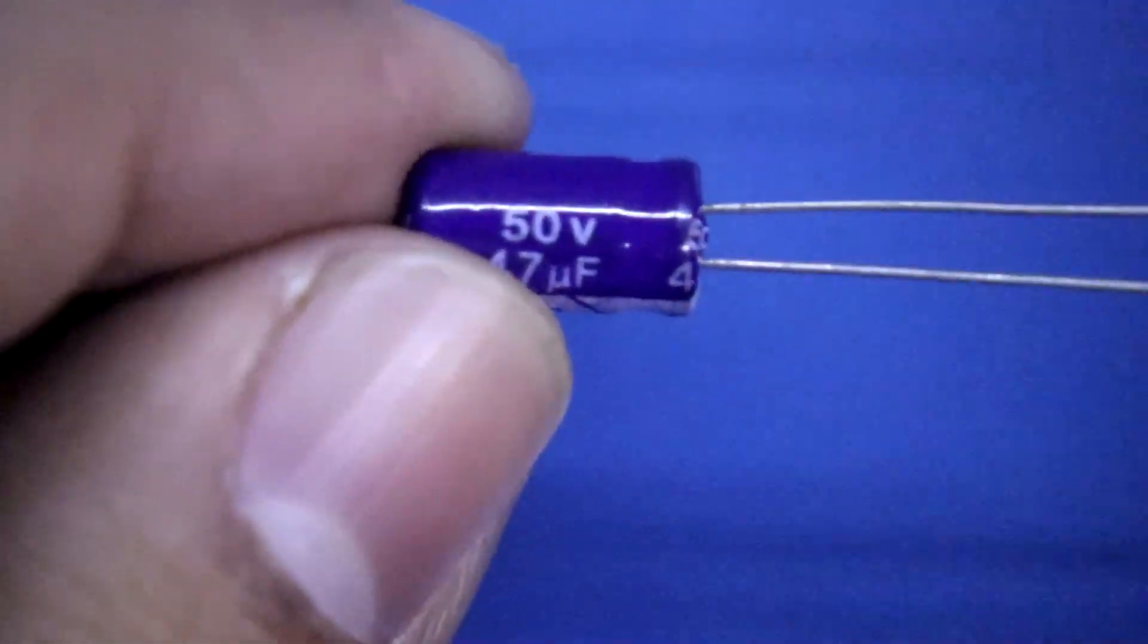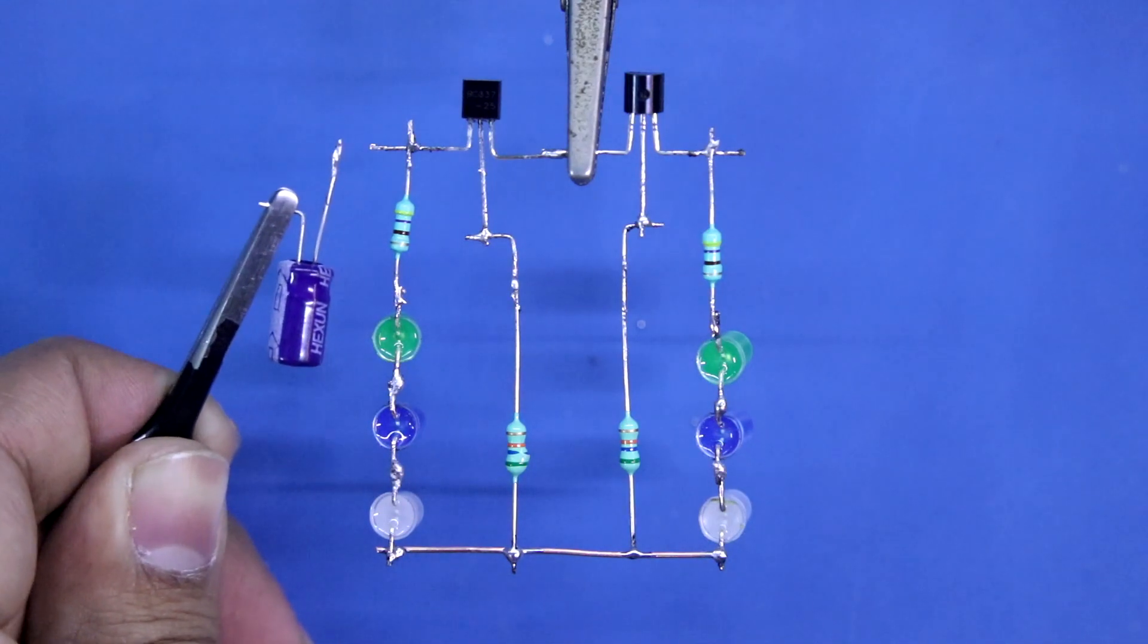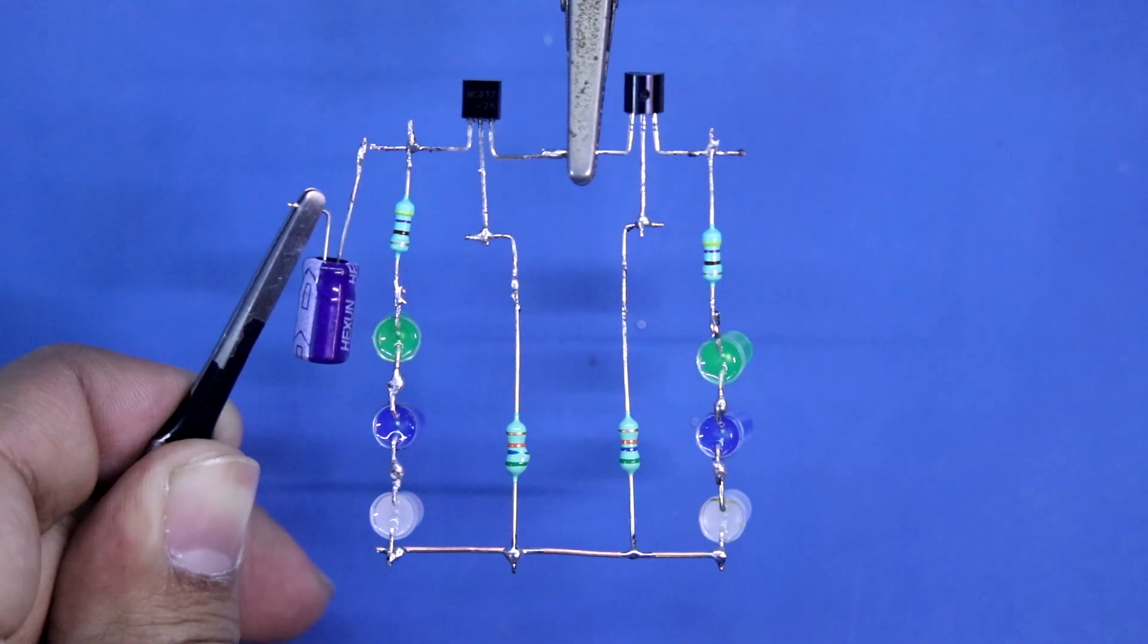47 microfarad capacitor. Now we have to connect the positive pin of the capacitor to the collector of the transistor.